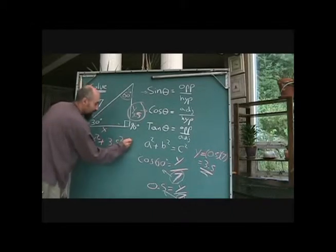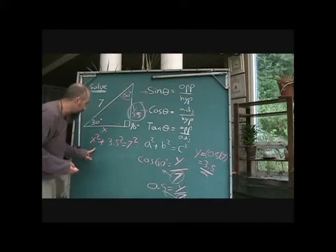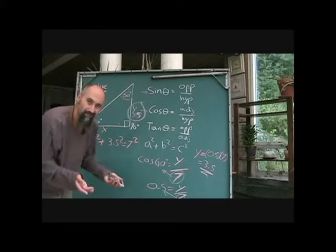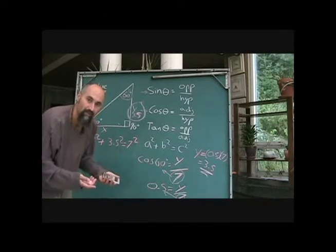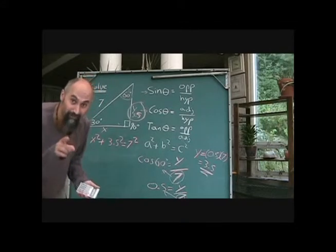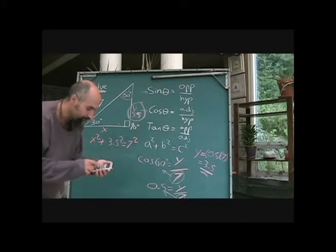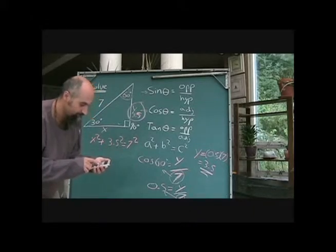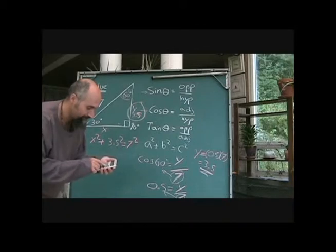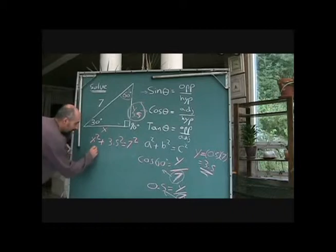All you're going to try to do is get X by itself. You're going to grab your calculator because 3.5 is not a clean number. If it was 3, you'd know it was 9 because you know your multiplication table. So 3.5² is 12.25, so you got x² + 12.25 = 7².